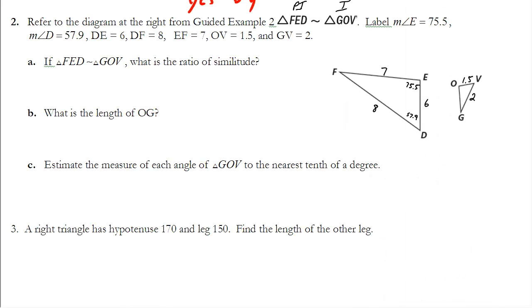Okay, let's take a look at example 2 here. It says refer to the diagram at right from the guided example number 2, that's from your reading, where triangle FED is similar to triangle GOV. Generally, when we have it written like that, the first figure we will refer to as the pre-image and the second figure is the image. It doesn't have to be that way, but most of the time it just works out better to work with it that way. And then it gives us the angle measures and the side lengths that are given, so I've labeled the triangle with those. You're going to want to do that on yours as well.